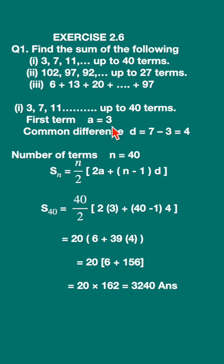the first term a is equal to 3. The common difference, 7 minus 3, is 4, and you can see 11 minus 7 is also 4.